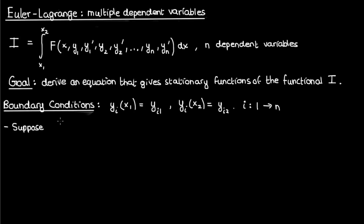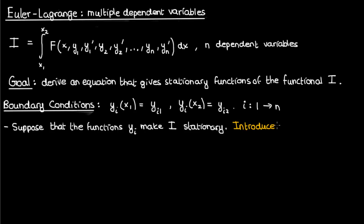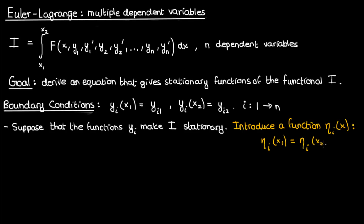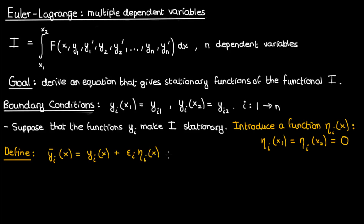Let's start the derivation by supposing that yi represents the functions that make the functional I stationary. What we're going to do is introduce a function eta_i of x with the only condition that it must be zero at the boundaries x1 and x2. Otherwise, eta_i is just a completely random function. We then define a new function yi bar given by our extremal yi plus some parameter epsilon_i times the arbitrary function eta_i.